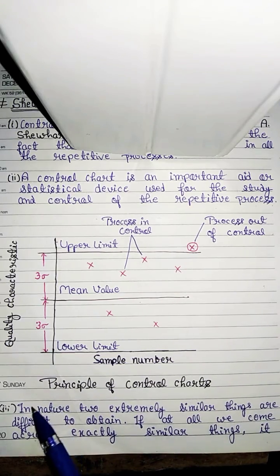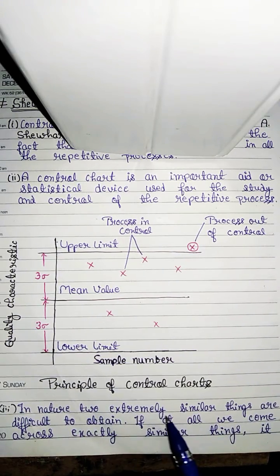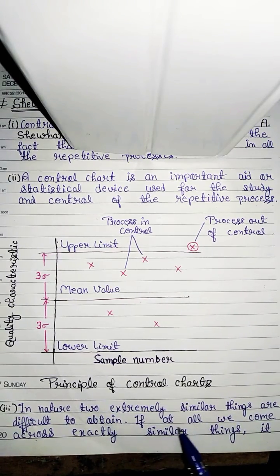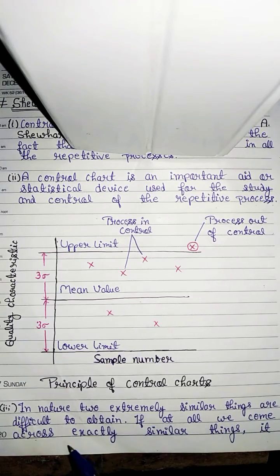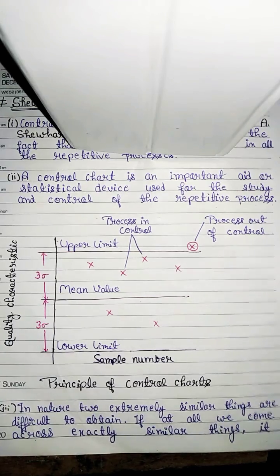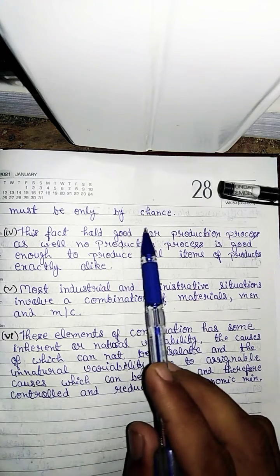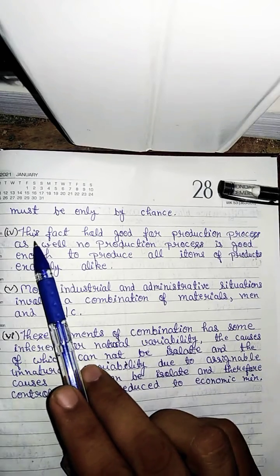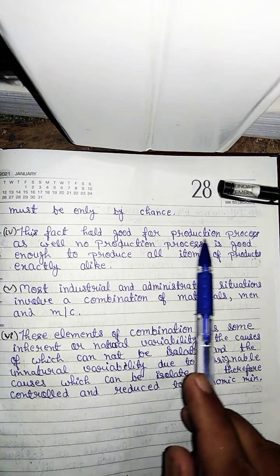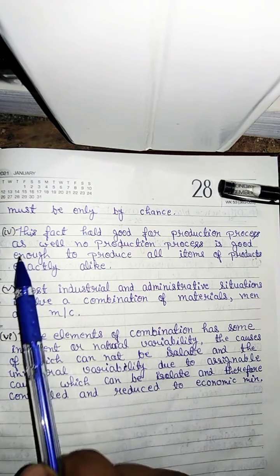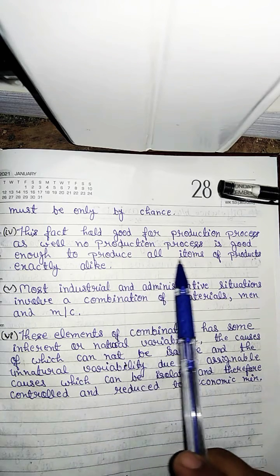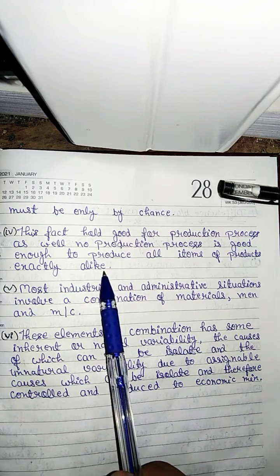Third point is that in nature, two extremely similar things are difficult to obtain. If at all we come across exactly similar things, it must be only by chance. The fourth point is that this fact holds good for production process. As well known, production process is good enough to produce all items of products exactly alike.